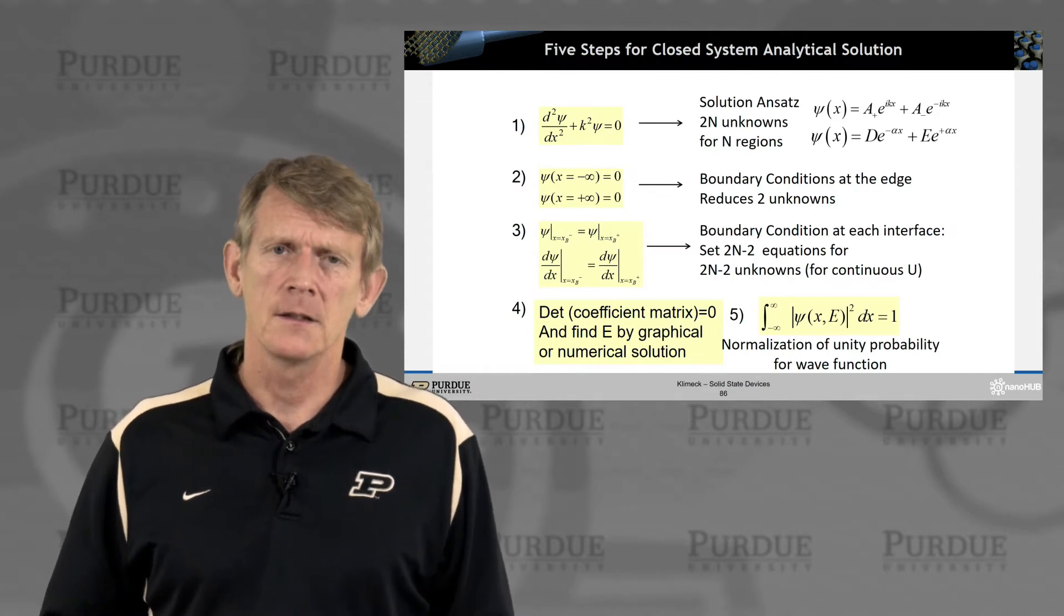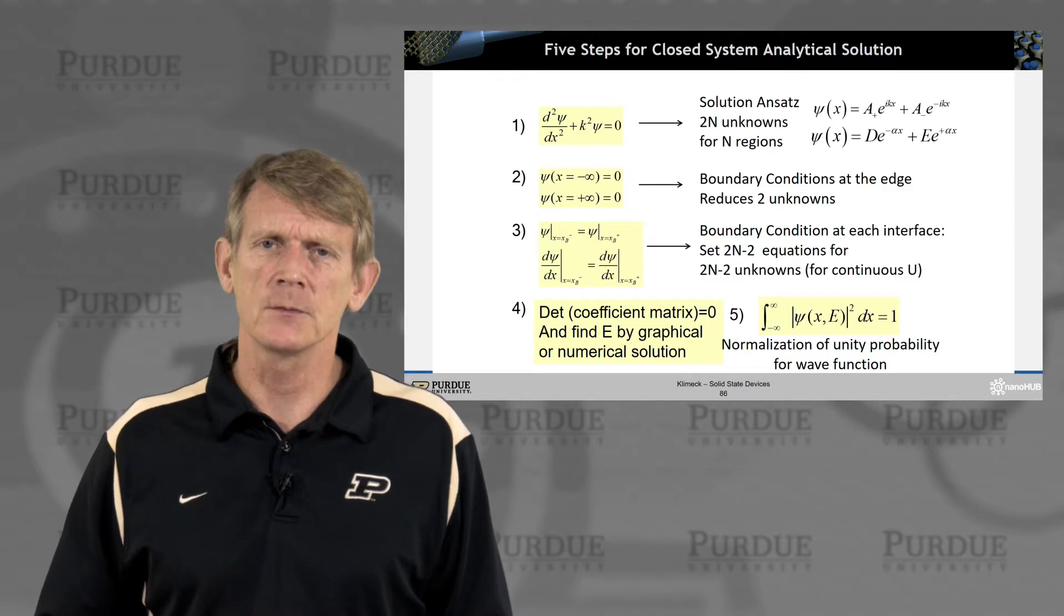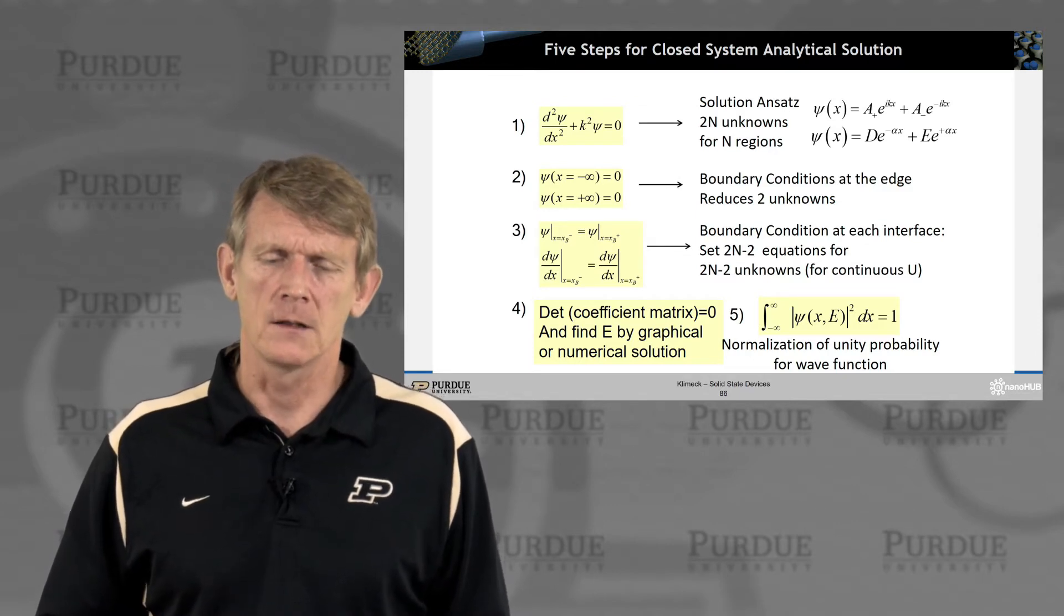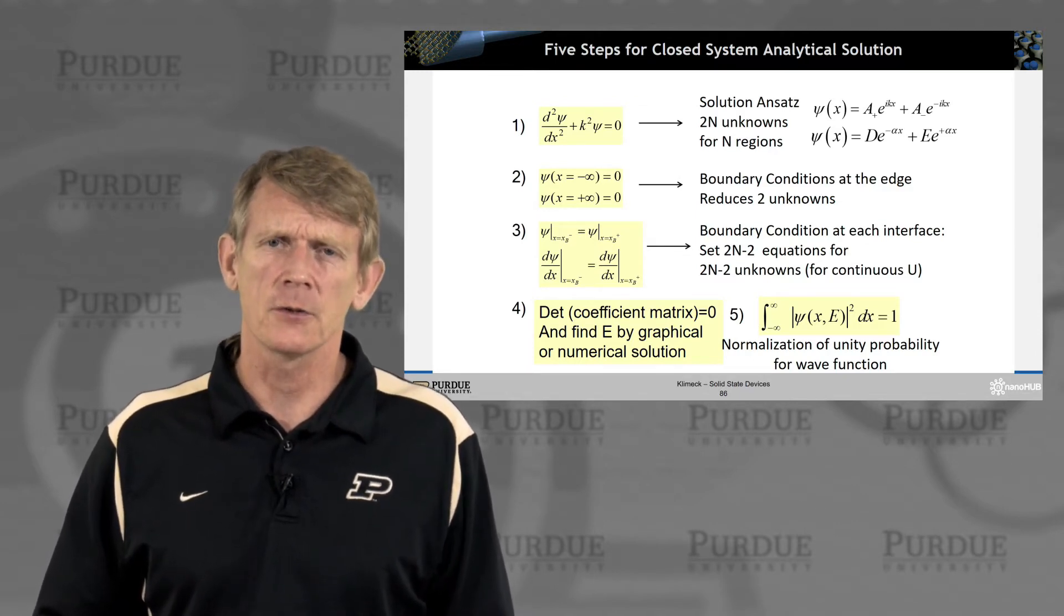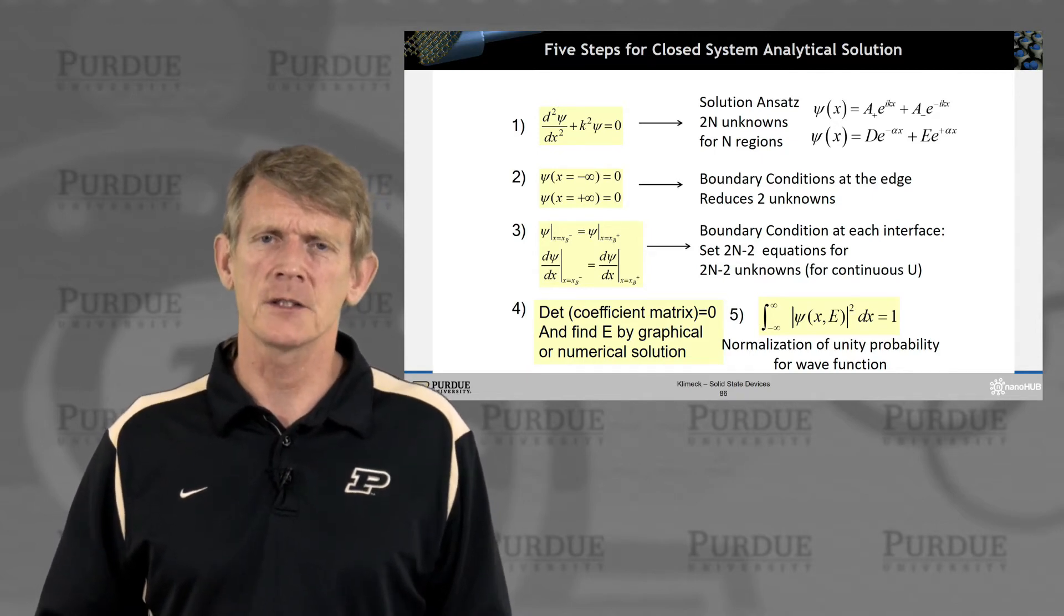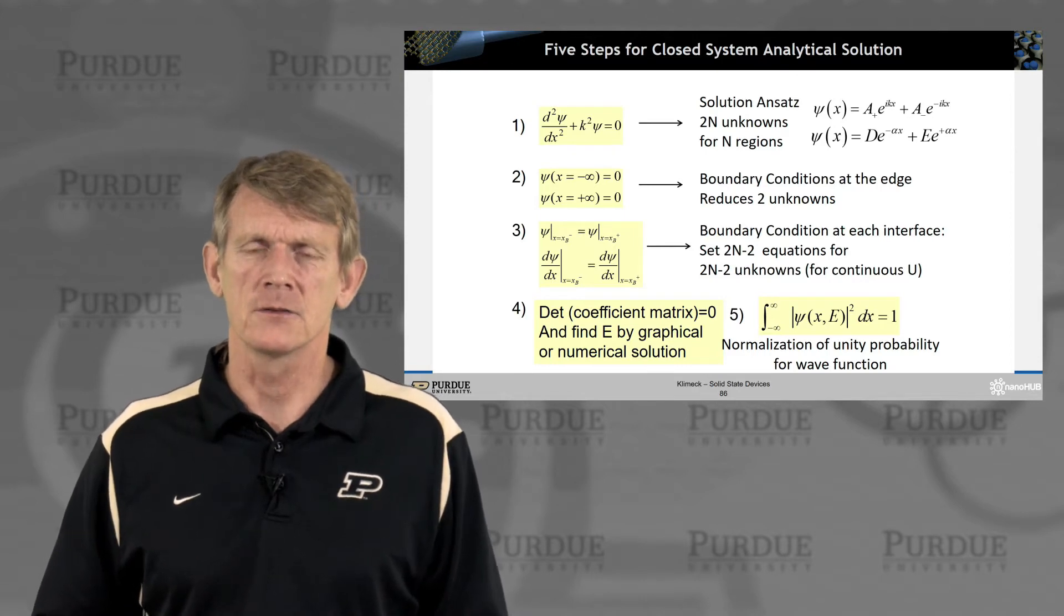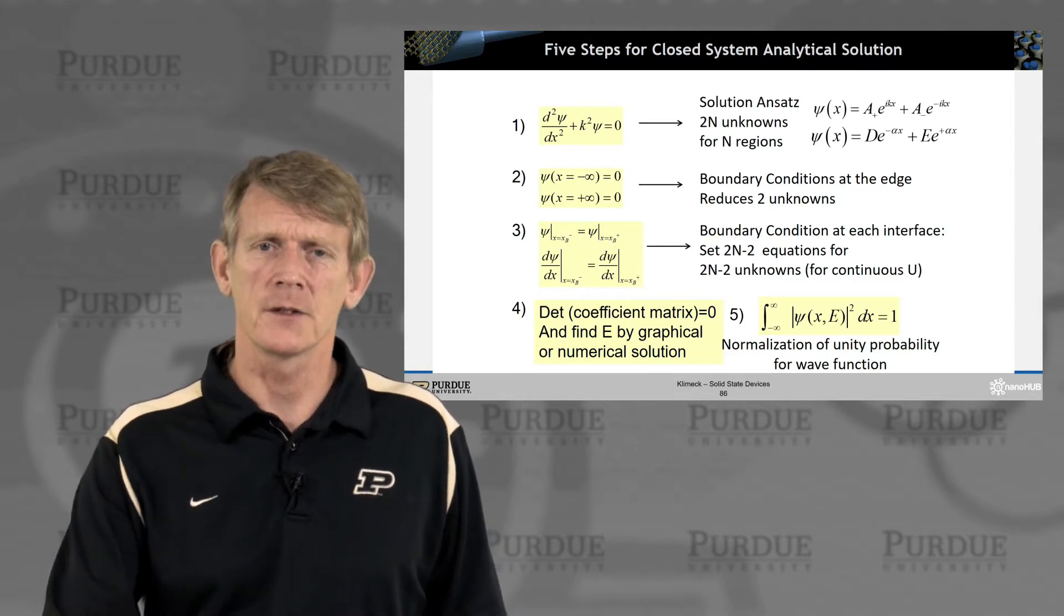So in the previous segments, we had talked about five steps for closed systems, where you solve the wave equation, Schrödinger's equation. You need to have boundary conditions, you can get the coefficients, and you need to normalize the wave function to one if you want to get the last coefficient in your system.